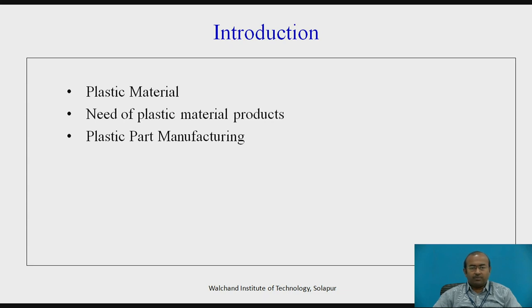This need has been extended due to the particular advantageous properties of plastic — like less weight, opaqueness to transparency optical properties, improved mechanical properties, and easily moldable properties. Because of the same, plastic material is used nowadays for many technical, domestic, and other varieties of part manufacturing.